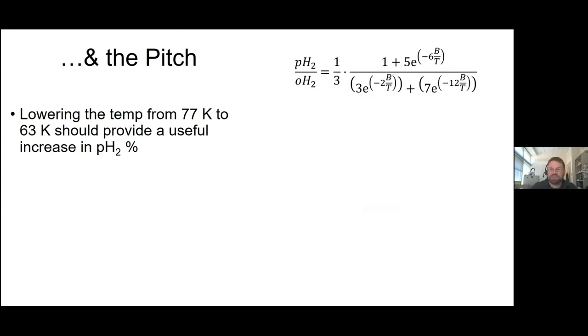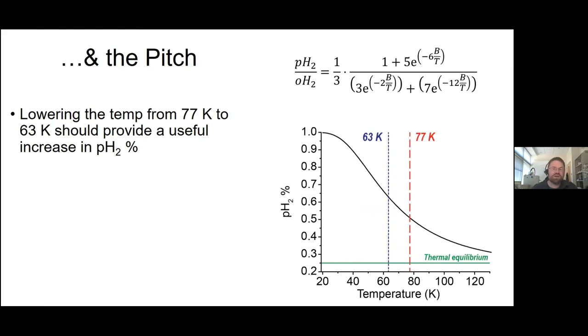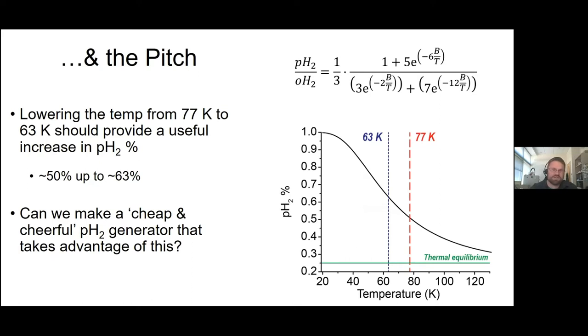You can figure out how much. You can calculate it based on the temperature. As you move from the boiling temperature to the triple point, you should expect an increase from around 50% up to about 63% of parahydrogen. It's not a huge increase, but it's potentially useful. The challenge we set for ourselves is can we use a fairly cost-effective and simple-to-use parahydrogen setup that takes advantage of this approach to give us an appreciable increase in parahydrogen percentage. That's what we went about doing.